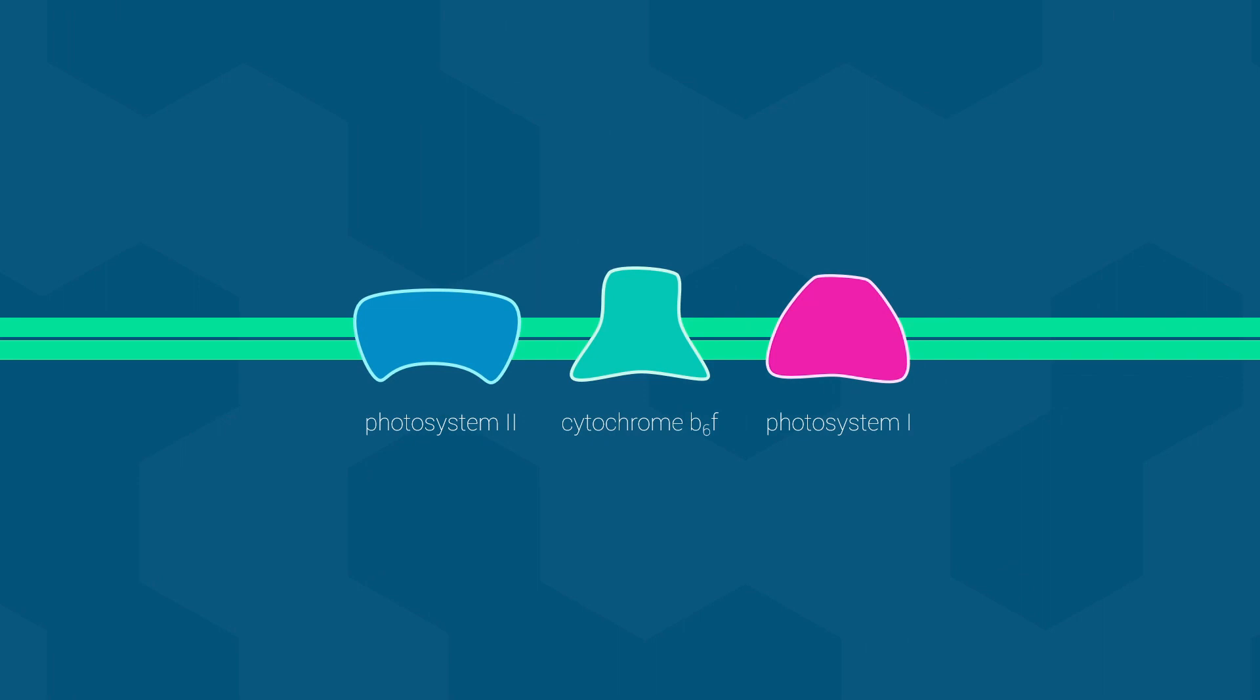Also like oxidative phosphorylation, photophosphorylation uses an electron transport chain. The three primary components we will look at are shown here: photosystem II, cytochrome b6f, and photosystem I. There are other components involved in photophosphorylation, but we only need to worry about these three for now.